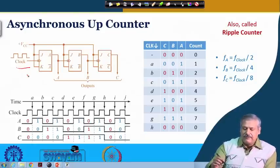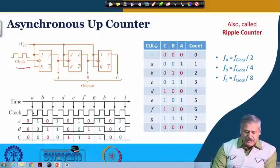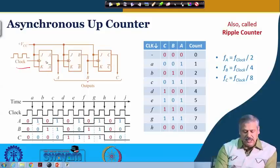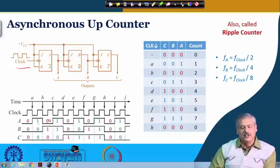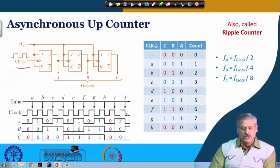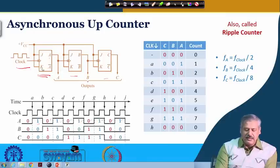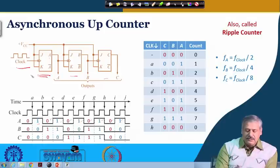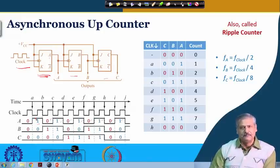Initially all flip-flops are initialized to 0 0 0. After the negative edge comes, as seen in the timing diagram, flip-flop A will toggle to 1. Another negative edge comes and it becomes 0, then 1, 0, 1, 0, 1 — this is how it continues. This is how the first flip-flop works. The external trigger, which counts how many clock cycles or negative edges are occurring, goes directly to flip-flop A, and flip-flop A toggles at each negative edge at time instances A, B, C, D, E.